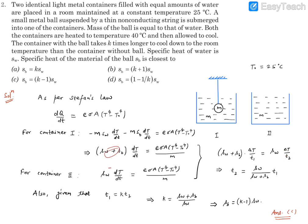This delta T is the difference between 40 degrees Celsius to 25 degrees Celsius, so this will be identical for both because they are cooling down by the same temperature difference. This is t1 time, this is t2 time. From here we can write t2 is equal to SW/(SW+SB) times t1. Now, given in the question...